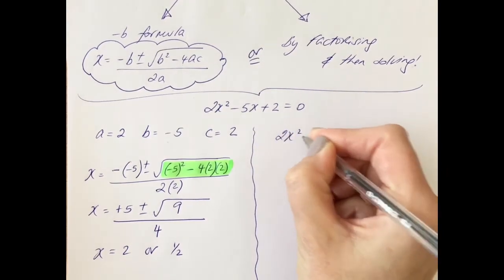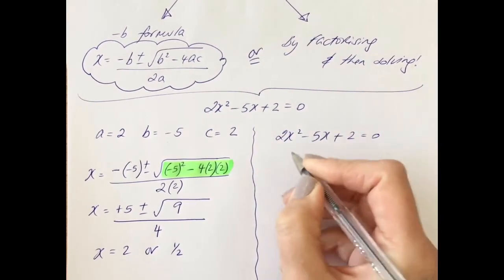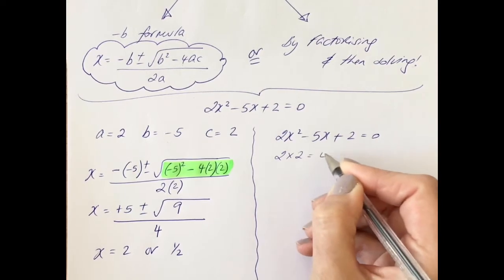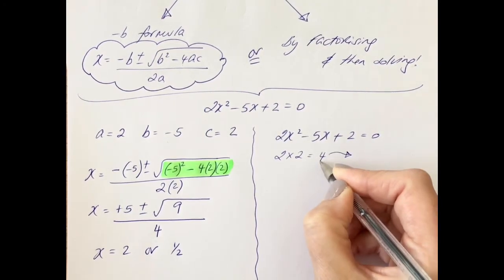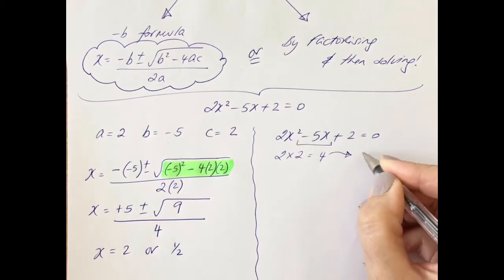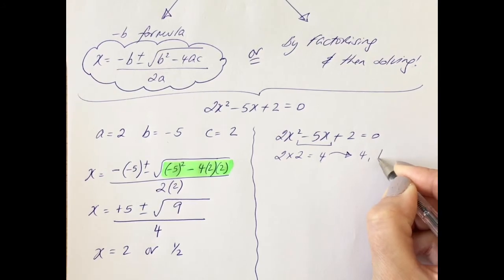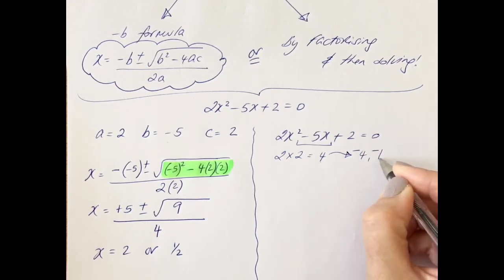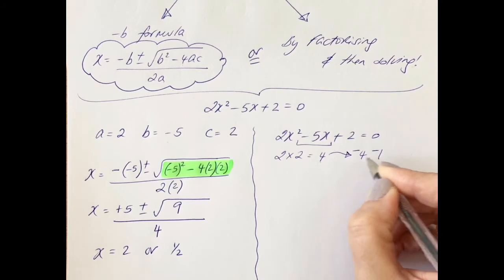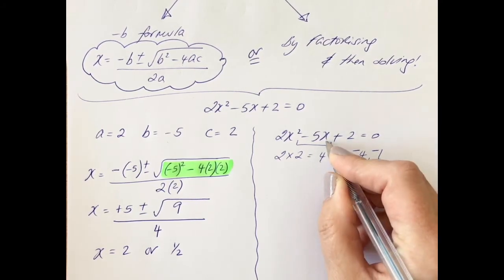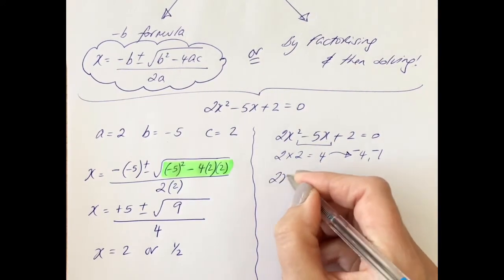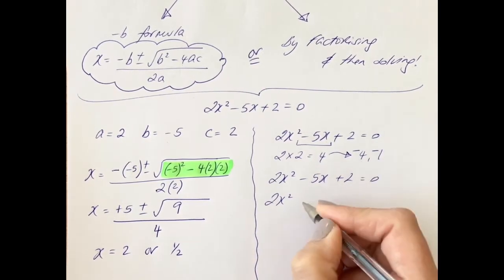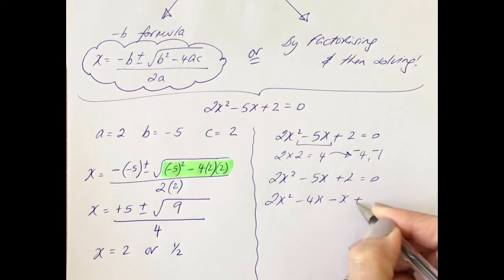Now we're going to solve it by factorizing. Your factorizing method is a four-step method when it's a trinomial quadratic. The first step is to multiply the first number by the last number, and I get 4. Second step is to get factors of 4 which will add to make a minus 5. Factors of 4 would be 4 times 1, and in order to make a minus 5 when adding these together it would be a minus 4 and a minus 1. Double-check that these two numbers multiply to make a plus 4 and add to make a minus 5 — and they do. Third step is to rewrite the quadratic: instead of minus 5x, I'm rewriting it as minus 4x minus 1x plus 2 equals 0.